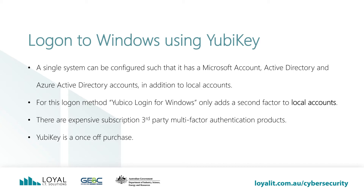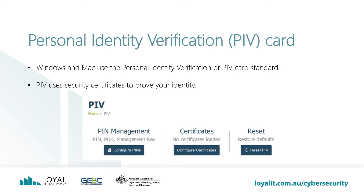To do this, we need to use the software YubiKey Login for Windows, which enables us to use second-factor authentication for local accounts. There are expensive subscription third-party multi-factor authentication products which can get incredibly complex. YubiKey is a once-off purchase and simple to use. Windows and Mac use the Personal Identity Verification, or PIV Card Standard, for smart card verification to log into the operating systems. PIV uses security certificates to prove your identity. The way certificates determine your identity is out of scope for these videos, but take my word for it — it is mathematically secure and computationally infeasible to try and guess keys. This is why they are the preferred method of identification validation. The US Federal Government uses PIV for accessing federally controlled facilities and information systems. As we will be logging into Windows, we will see PIV in action.